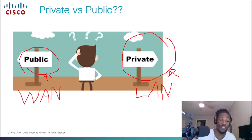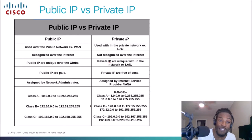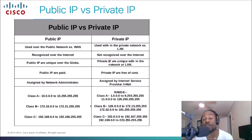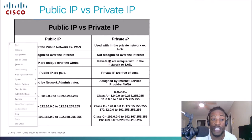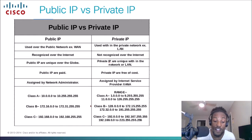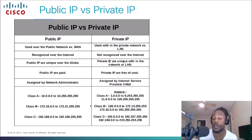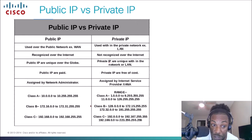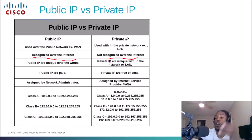Now that we've talked about what's private and public, we can talk about the difference between public IPs and private IPs. A public IP address is used over the public network — the wide area network — to communicate outside of our network. A private IP address is only used to communicate locally within the private network. Private IP addresses are not routable on the Internet.